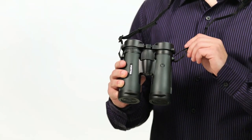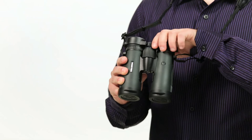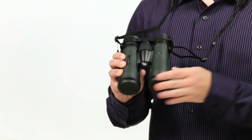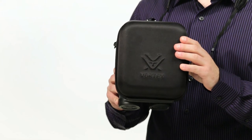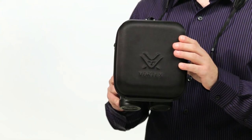It comes with a neck strap, rain guard, tethered objective lens covers, a custom-molded case, and Vortex's lifetime unlimited unconditional VIP warranty.